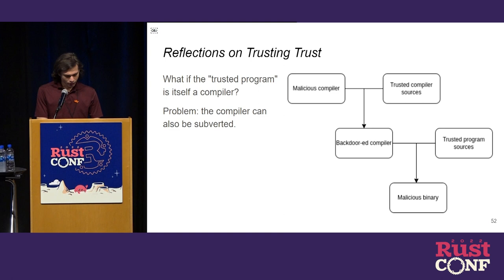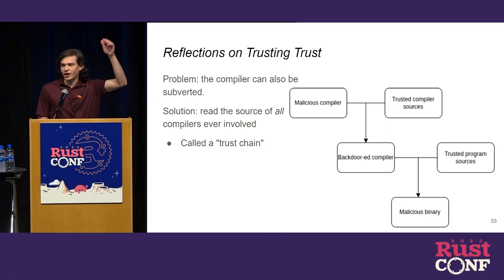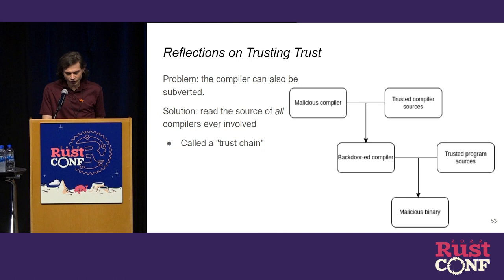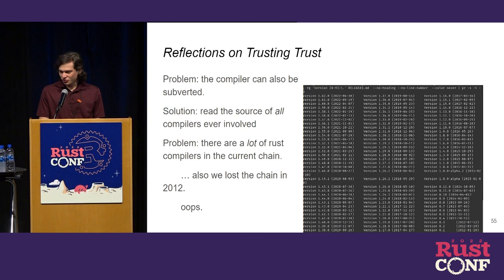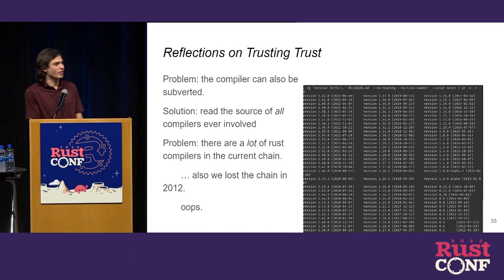The answer is you keep going up the chain — you keep reading more and more compiler sources until every single compiler ever used in the history of your program looks good. This is called a trust chain. The problem for Rust is our trust chain is pretty long, and not only that, it kind of trails off in 2012 — releases before that are hard to find, and you'd have to go through the build system and read makefiles by hand.